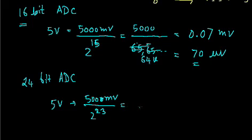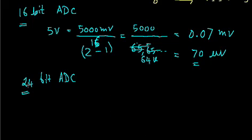So, 24-bit ADC is there, 2 to the power 24 minus 1. So, 5000 millivolt divided by 2 to the power 24 minus 1.